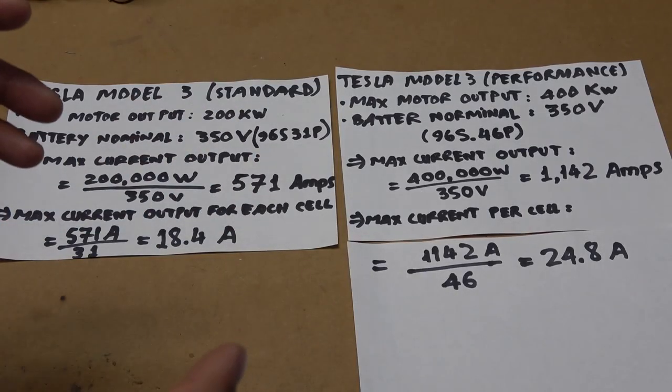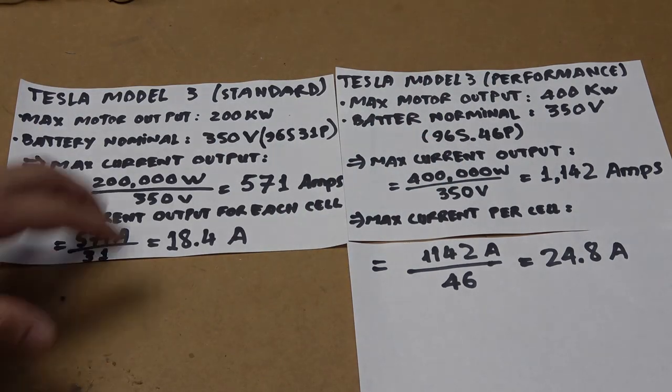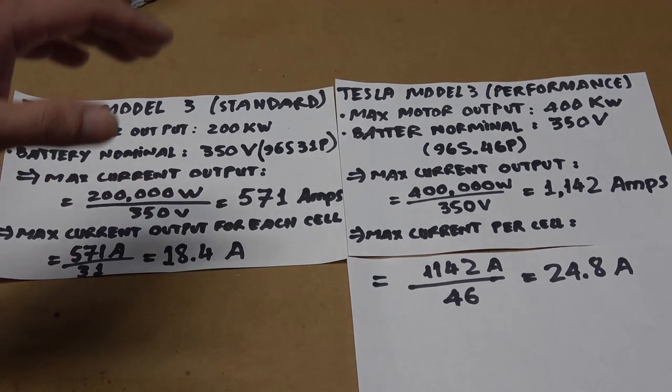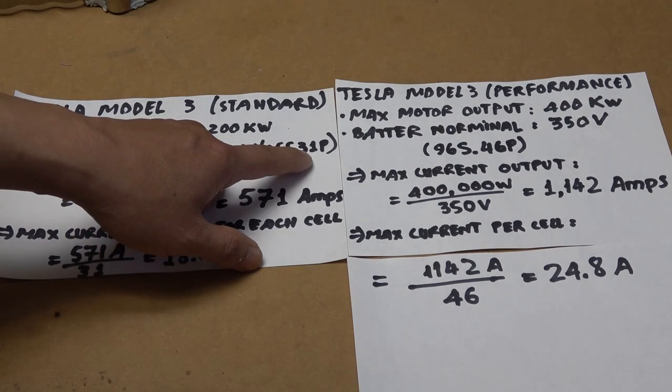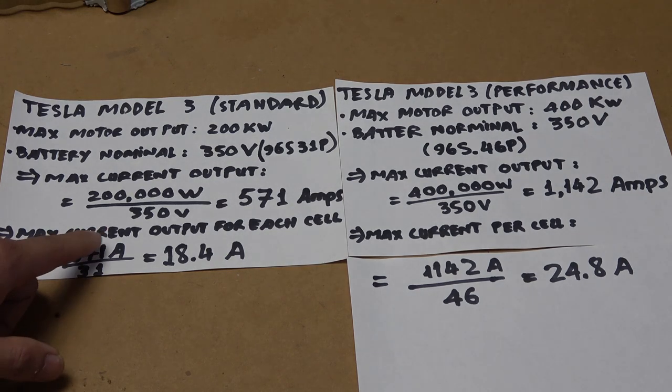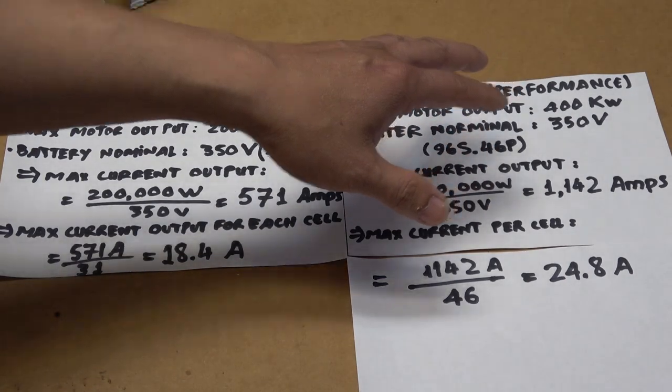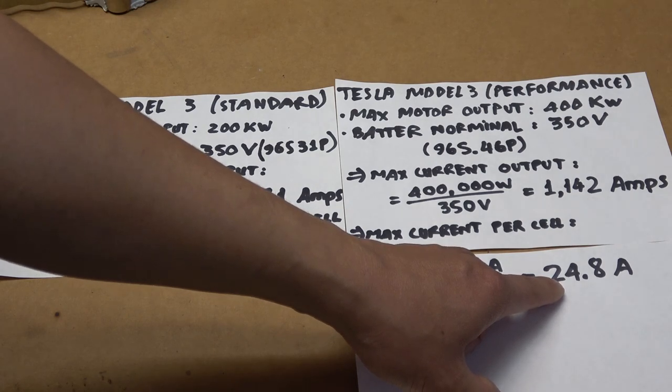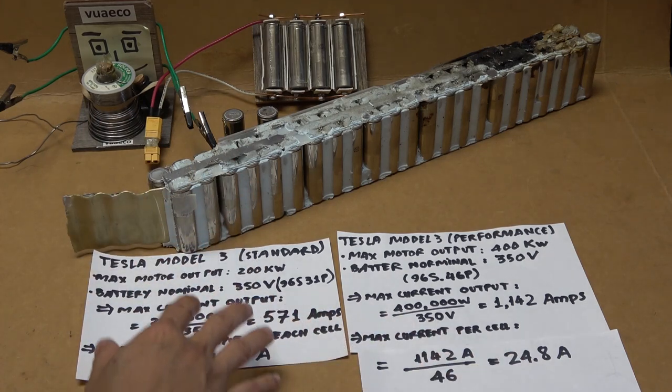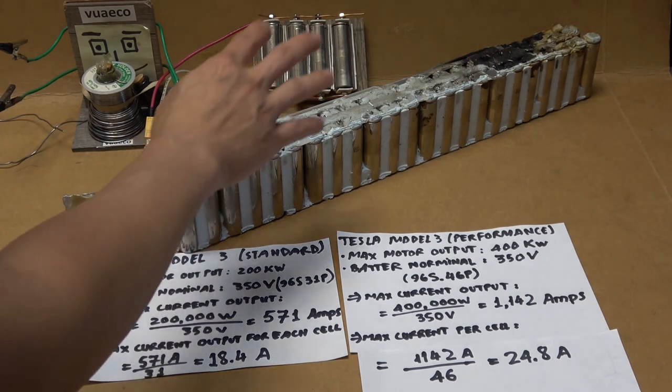I can calculate that using the specs from the Model 3 Standard and Model 3 Performance. For the Standard, I have a maximum current output of 571 amps. The battery pack is 96S 31P, meaning it has 31 cells in parallel. So for each cell, the maximum current output is about 18 amps. For the Performance, doing the same calculation, I have 25 amps maximum output per cell. Tesla is able to achieve this because it has a very efficient cooling system that can cool every single cell in the whole battery pack.